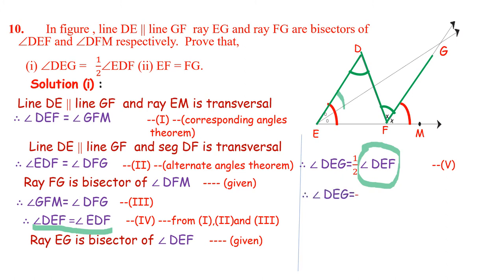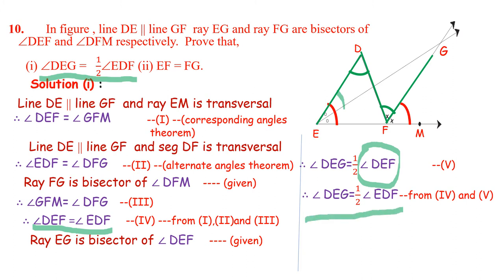Write down: angle DEG is equal to one-half of angle EDF. Here, in the question, what is asked? Angle DEG is equal to half of angle EDF — and here we have proved it: angle DEG is equal to half of angle EDF.